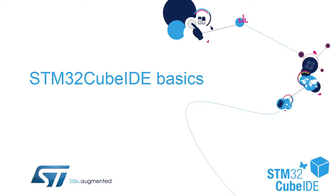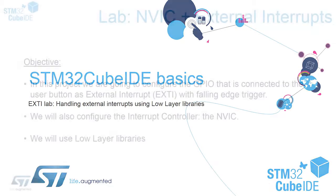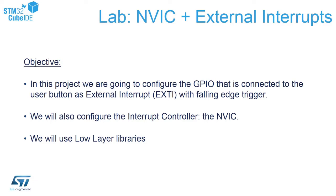Hello and welcome to our STM32 Cube IDE Basics training session. In this part we will convert an existing example from HAL to Low Layer. We will reuse our existing external interrupt hands-on session, which was fully done using HAL (Hardware Abstraction Layer) libraries, and change it to Low Layer. In this project we have two GPIOs configured: one output to control an LED and one external interrupt connected to the blue button.